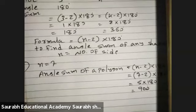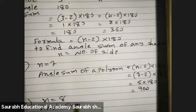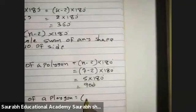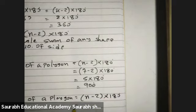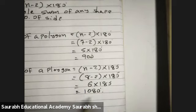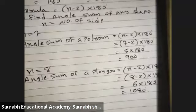Question B: N is equal to 8. Therefore, angle sum of a polygon equals N minus 2 into 180. So, 8 minus 2 into 180 equals 6 into 180, that will be 1080.